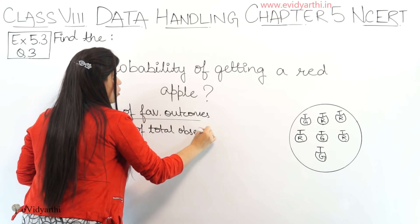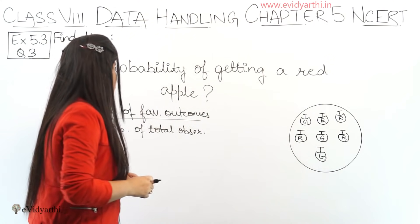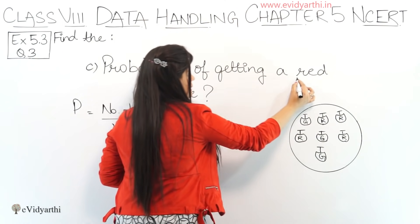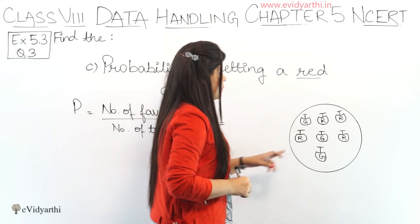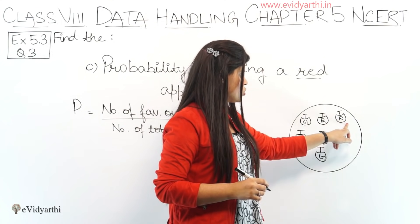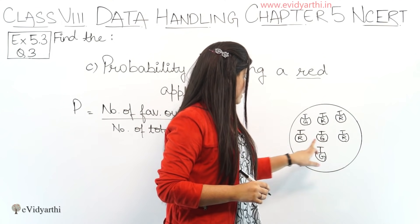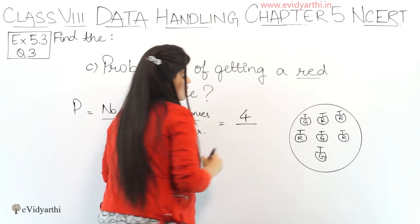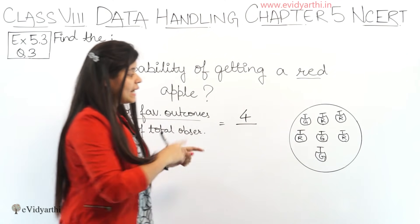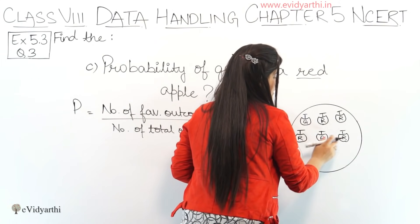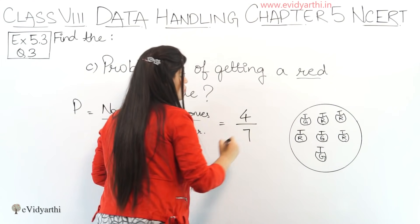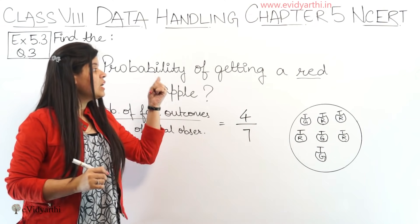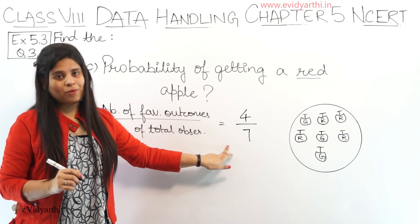So here, the number of favourable outcomes is a red apple. Counting the red apples: 1, 2, 3 and 4 — so number of favourable outcomes = 4. And the total number of apples: 1, 2, 3, 4, 5, 6, 7 — total is 7. So this will be 4 upon 7. The probability of getting a red apple is 4 upon 7.